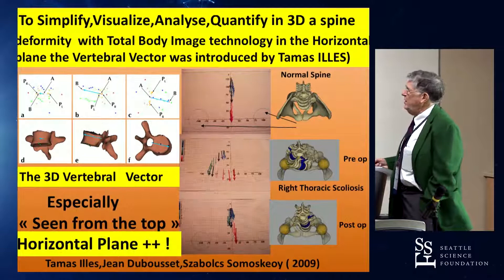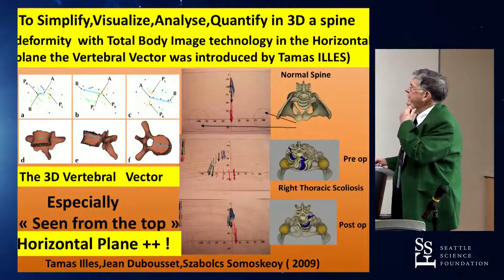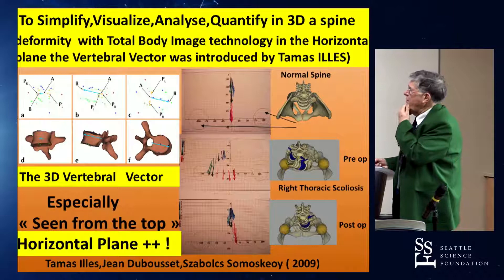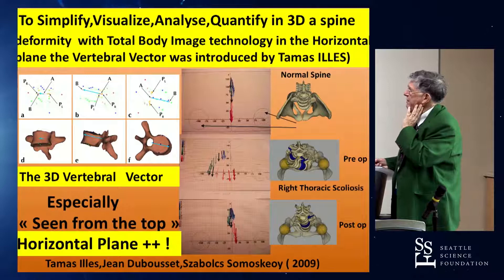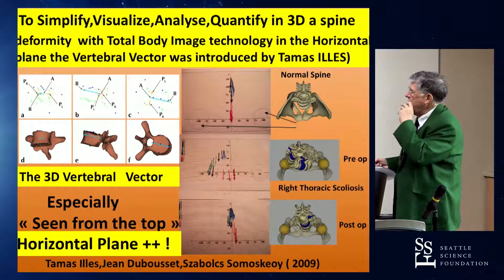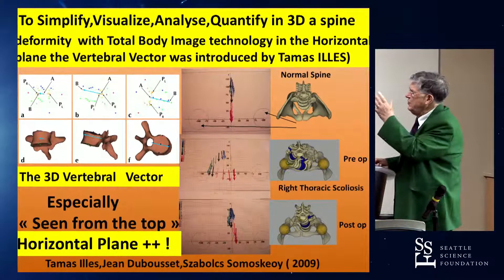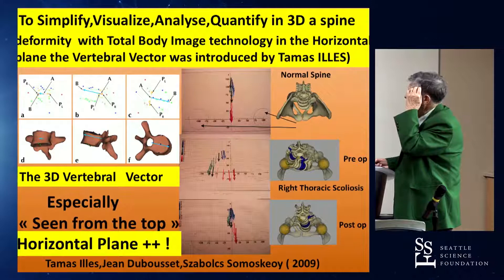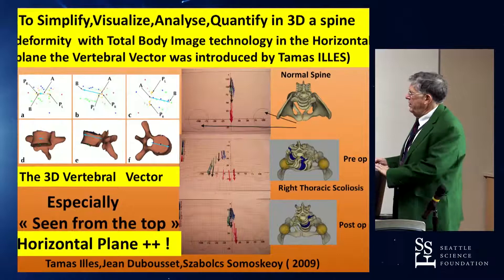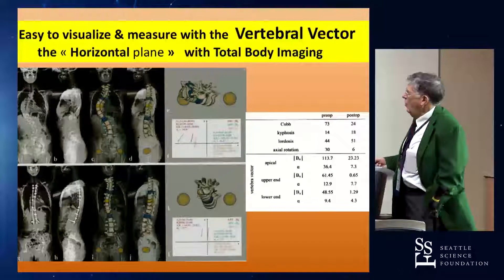One of my fellows, now a surgeon in Brussels, originated from Hungary, described the vertebral vector. We can analyze in each of the three planes the direction of this vector, taken from the center of the two pedicles. You see very well the aspect of the normal spine, the aspect of right thoracic scoliosis, and after the correction. This view from the top gives you all the measurements you need — the x-ray, the reconstruction, and the measurements we can get with the total body imaging.